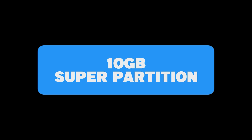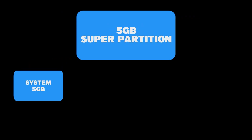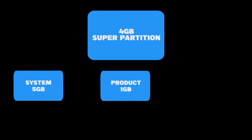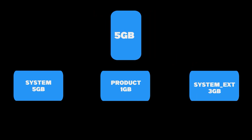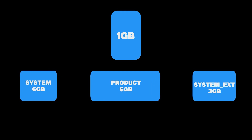Dynamic partition uses a single system partition — let's say 10 GB — and creates three virtual dynamic partitions from it, like system, product, and system_ext. These three partitions can change their size dynamically whenever needed.